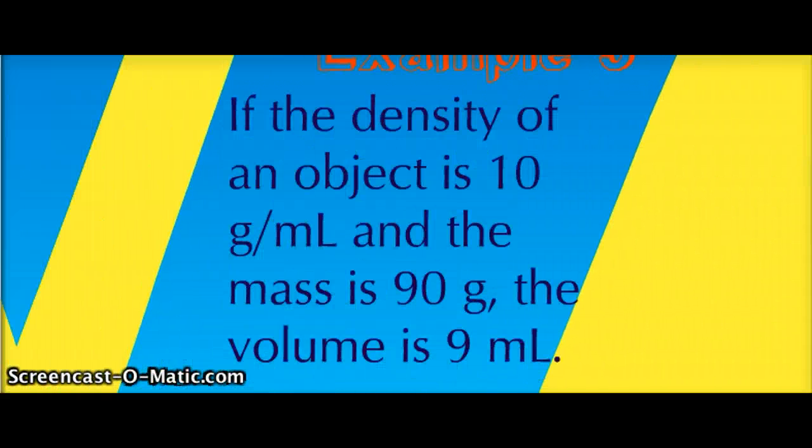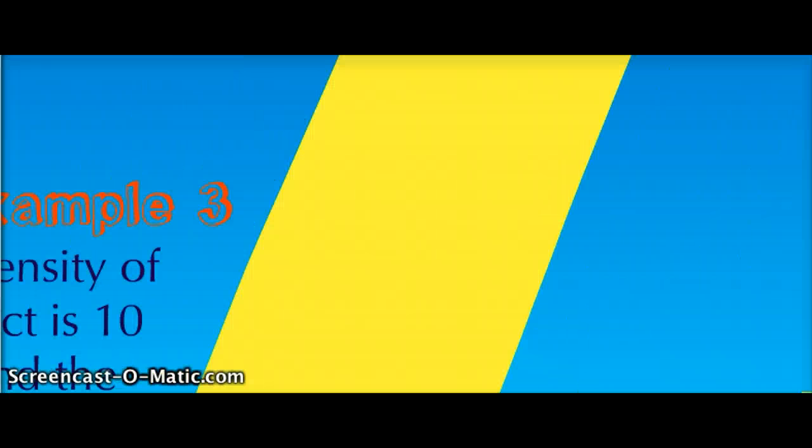Example number 3. The density of an object is 10 grams per milliliter and the mass is 90 grams. This means that the volume is 9 milliliters.